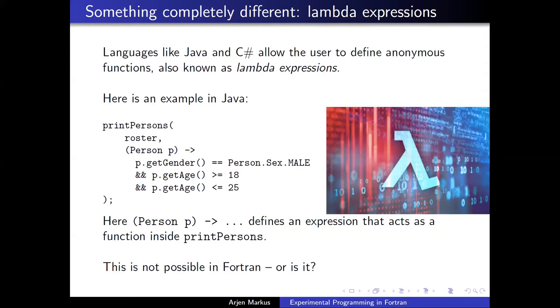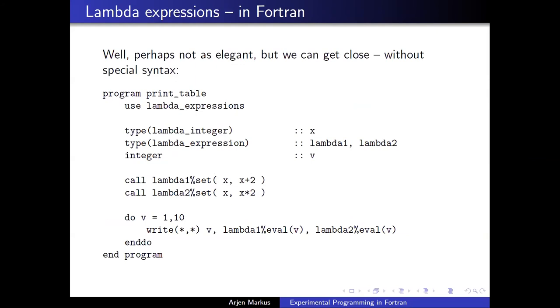I mentioned lambda expressions before, and languages like Java and C-sharp, but also Python, have such expressions. They define anonymous functions. Here's an example from a Java program. The idea is that this part of the expression defines the lambda expression, and it is a condition on this particular function to print the details of the person, depending on whether he or she conforms to these conditions. You would think that that's not possible in Fortran. Well, we can do things that are quite similar. Of course, my implementation is very simple just to show that, in principle, it can be done.